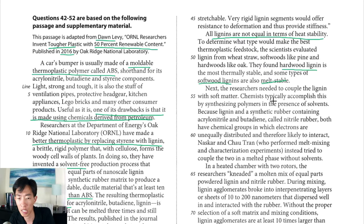Now we're going to talk about how they actually combine it. It says the researchers needed to couple the lignin with soft matter. Chemists typically accomplish this by synthesizing polymers in the presence of solvents. One advantage of the process that they used, this was Naskar and Chow Tran, is that they tried to couple the two in a melted phase without the use of solvents, which presumably is better for the environment.